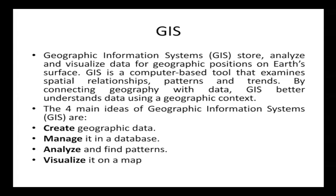GIS is a powerful tool to store, analyze, and visualize data for geographic positions on the Earth's surface. It is a powerful computer-based technology to examine spatial relationships, patterns, and trends. By connecting geography with data, GIS better understands data using a geographic context. The four main ideas in GIS are: create geographic data, manage it in a database, analyze and find patterns, and finally visualize on a map.